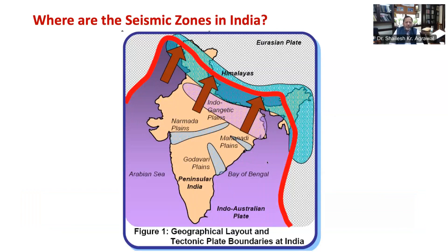Look at this figure, which shows the geographical layout of our country and tectonic plate boundaries of India. As you can see, India lies in the north-western end of the Indo-Australian plate. This plate is colliding against the Eurasian plate. In fact, the Indo-Australian plate is going under the Eurasian plate, and this gives rise to earthquakes in our country.